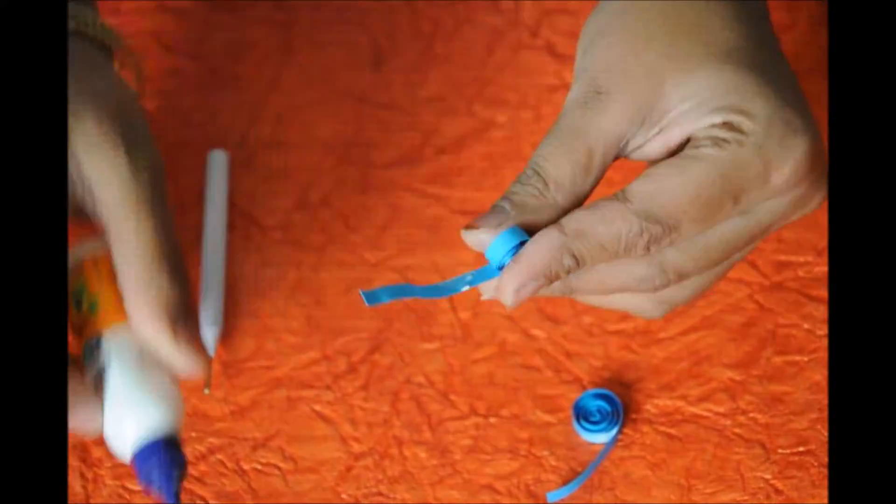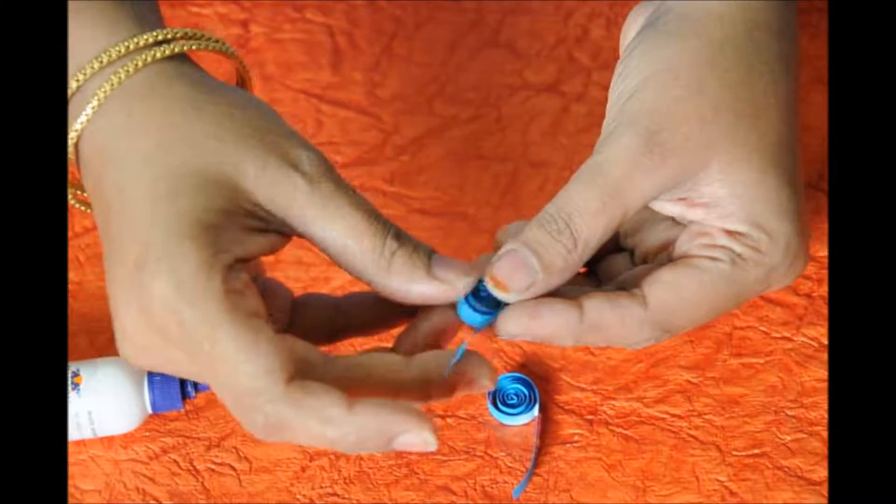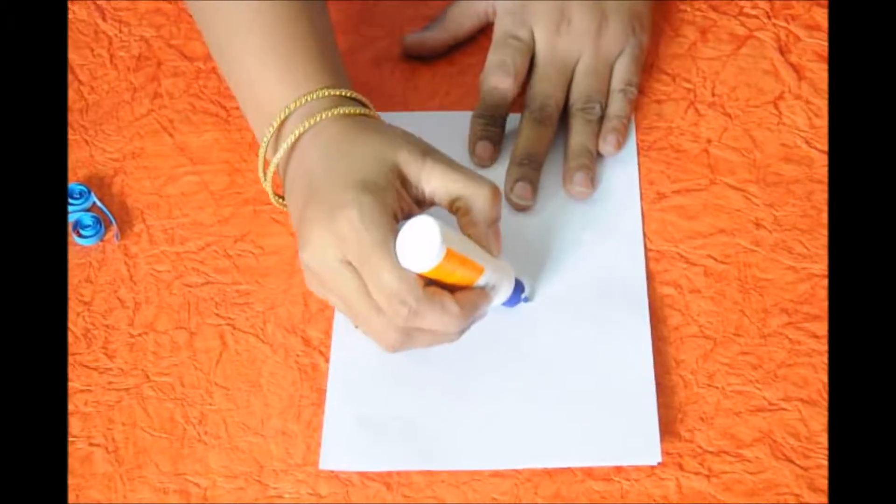If you want you can fold the paper into half, but I did it in a different way this time because I wanted bigger rounds to happen. I'm just ensuring that both rounds are of the same size and then I'm just gluing it on the paper.